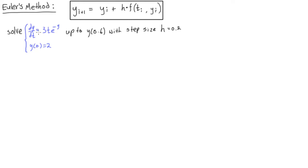All right, we have another Euler's method problem here. We have a differential equation with initial conditions. We want to solve up to y at 0.6, step size of 0.2, and we also want to find the error in our approximations. So, first of all, from our initial conditions, we know that y naught is equal to 2, and t naught is equal to 0.